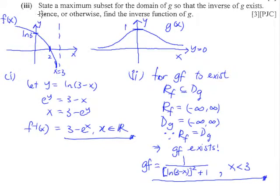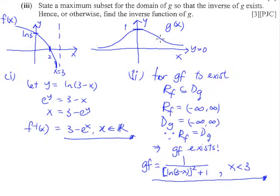State a maximum subset for the domain of g such that the inverse of g exists, and find the inverse function of g. The g inverse doesn't exist because g is not one-to-one. So how do we make it one-to-one such that we have a maximum domain?